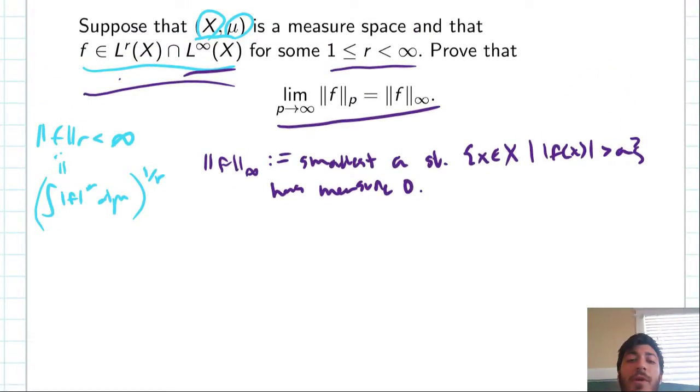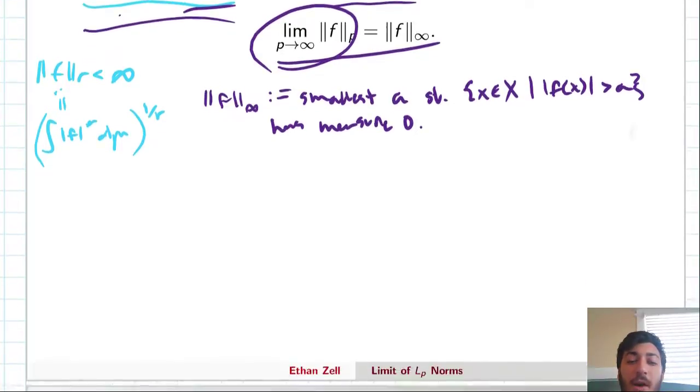So, a priori, we don't even really know that this limit on the left exists. And because of that, we might be thinking that maybe the best way to do this is to prove a two-sided inequality and pass the liminf or the limsup of this fp norm, and then maybe we can get to an equality and show that this limit exists by showing that equality.